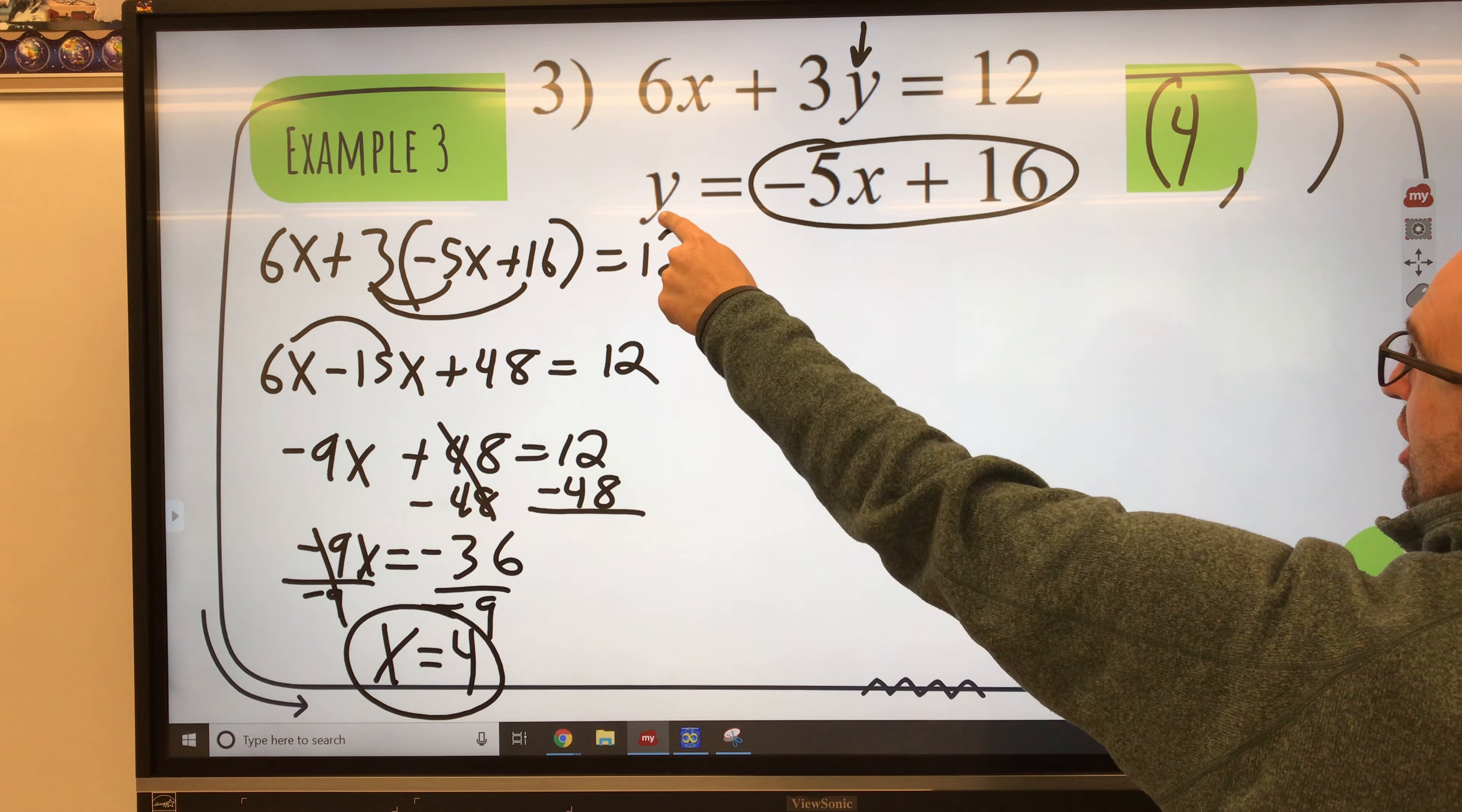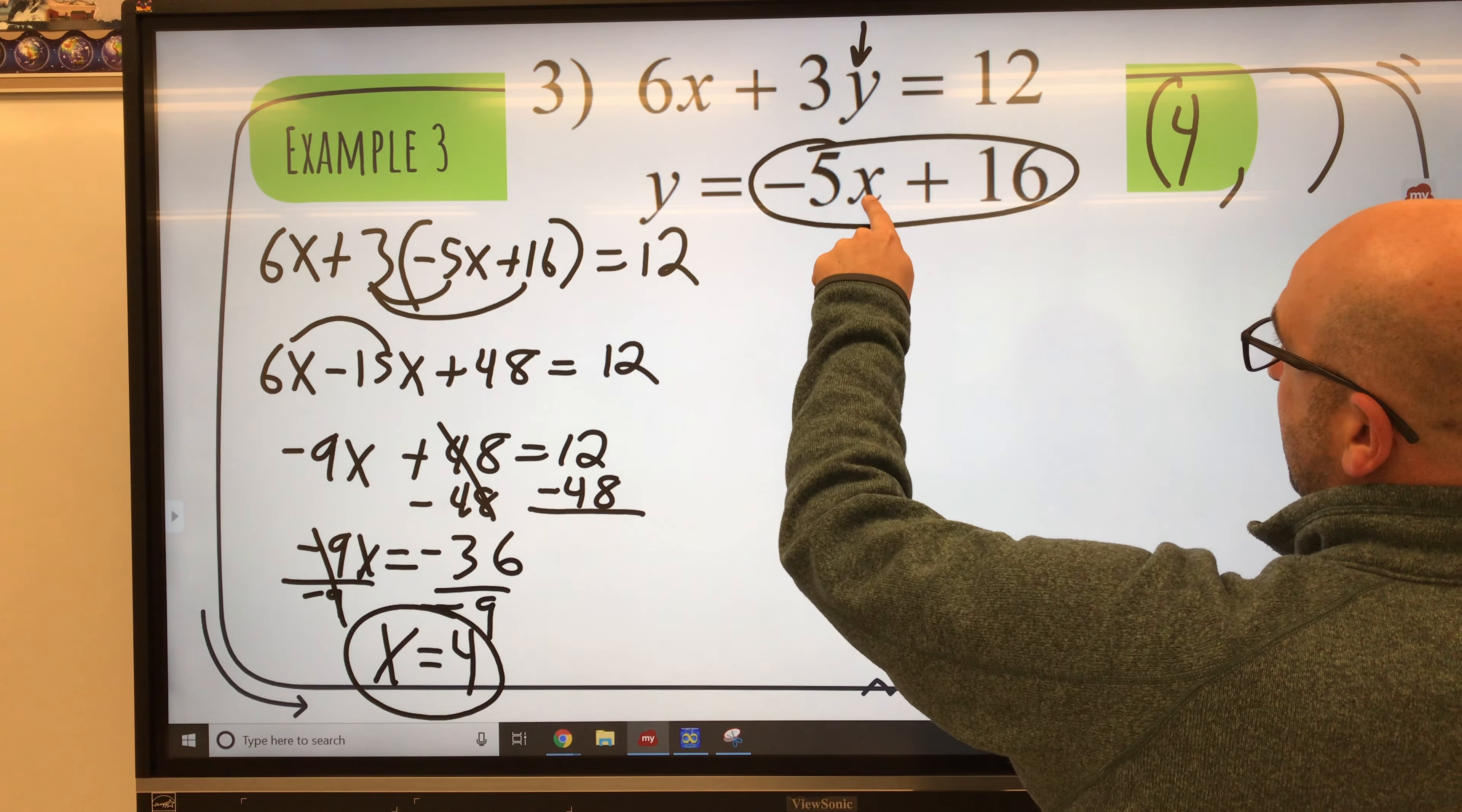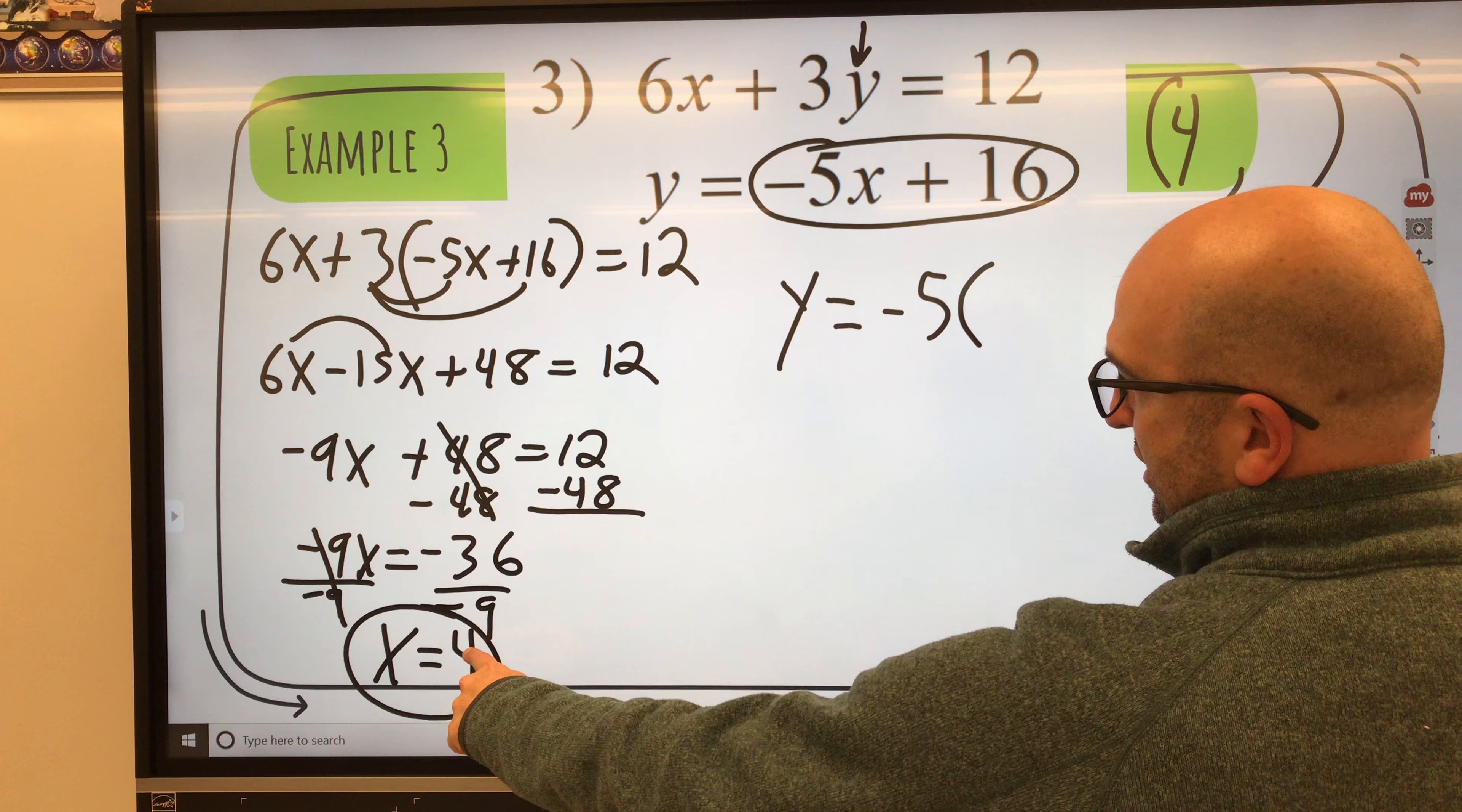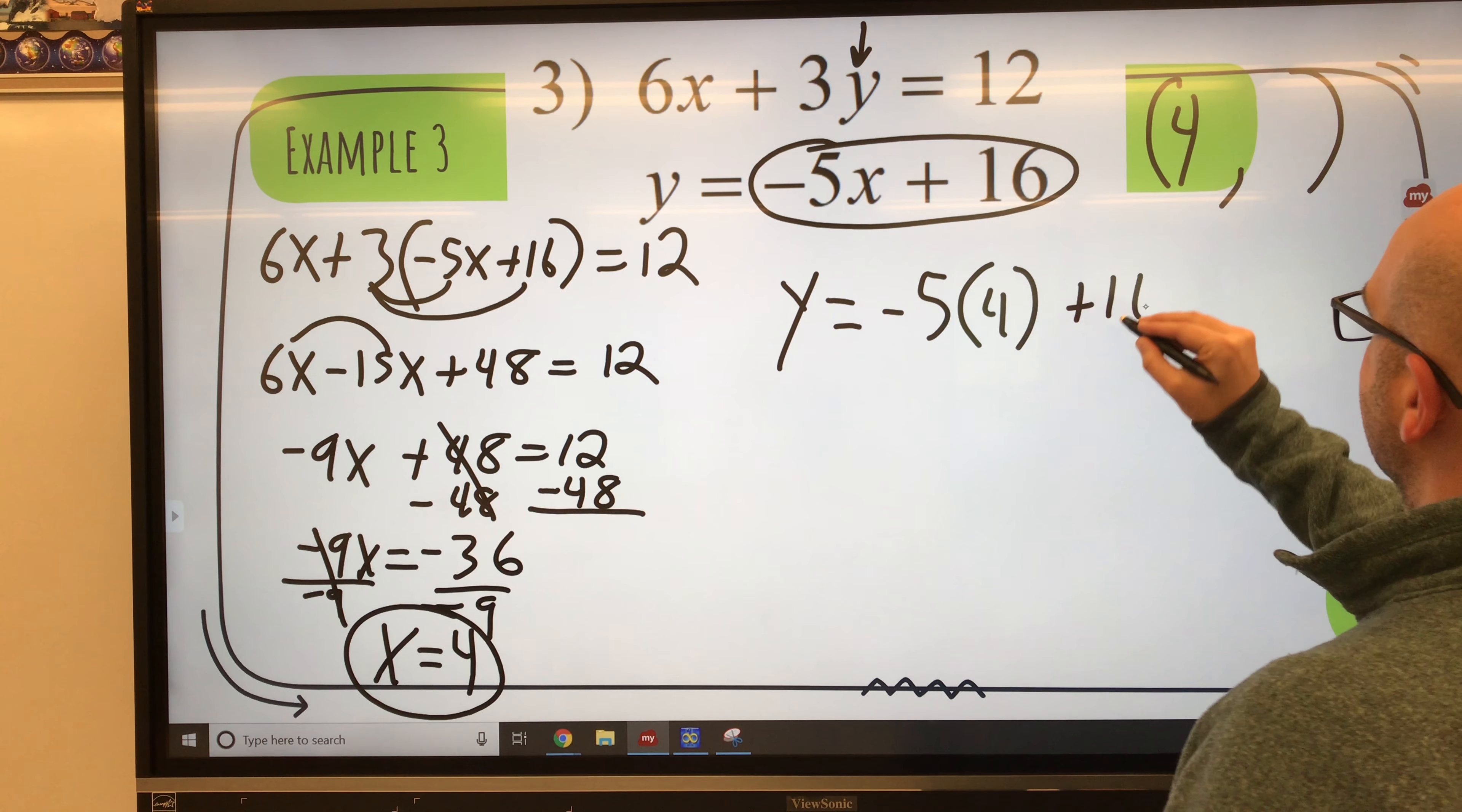So I'm going to substitute that 4 in for where x is in this equation. So y equals negative 5 times 4 plus 16.